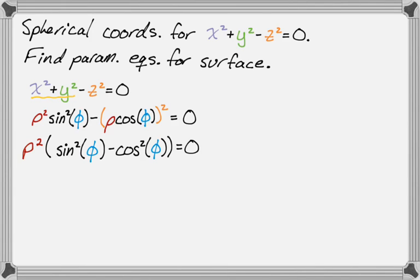So you get rho squared, the quantity sine squared of phi minus cosine squared of phi. And that equals zero. All right. So from this, we get kind of two equations. So we either get that rho squared is equal to zero, or I'm going to kind of jump and just say we get that sine squared is equal to cosine squared of phi.